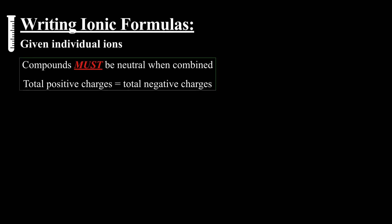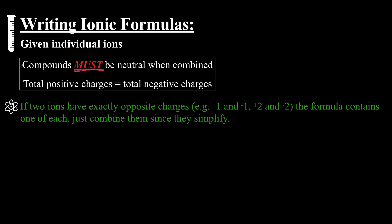When we're given individual ions, one thing we have to remember is when we combine them, the charge is going to be neutral, so positive charges are going to equal negative charges. We're going to start off with like charges, so the exact same opposite charge, so plus one with negative one, plus two with negative two.